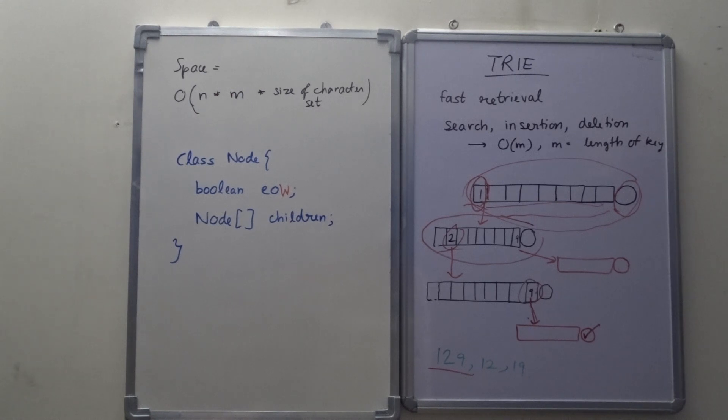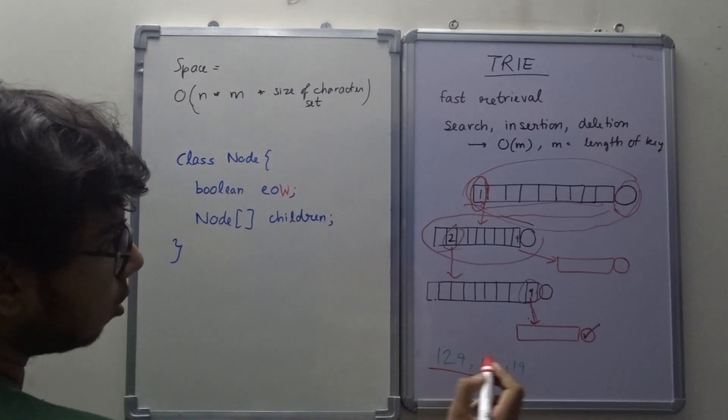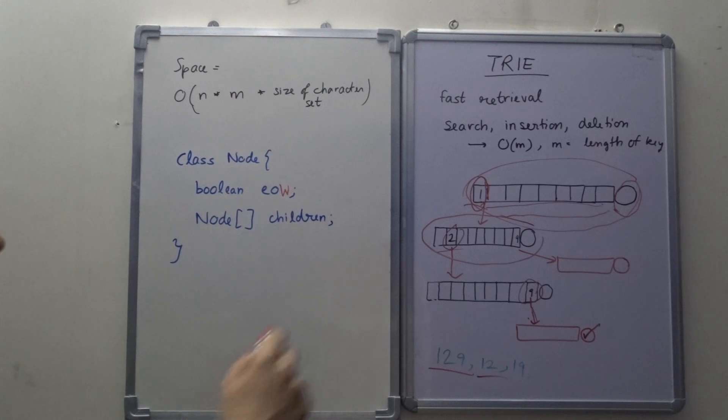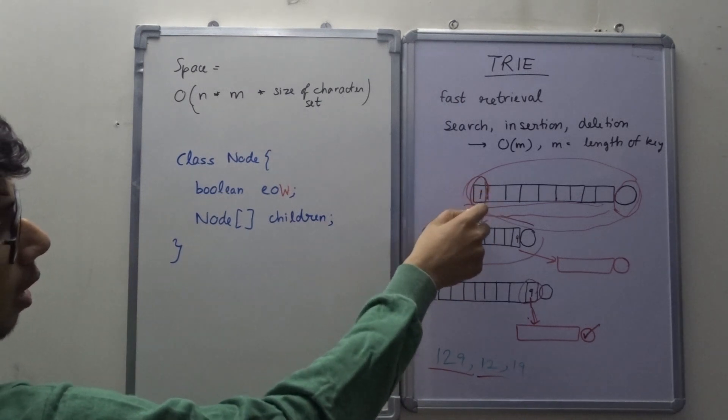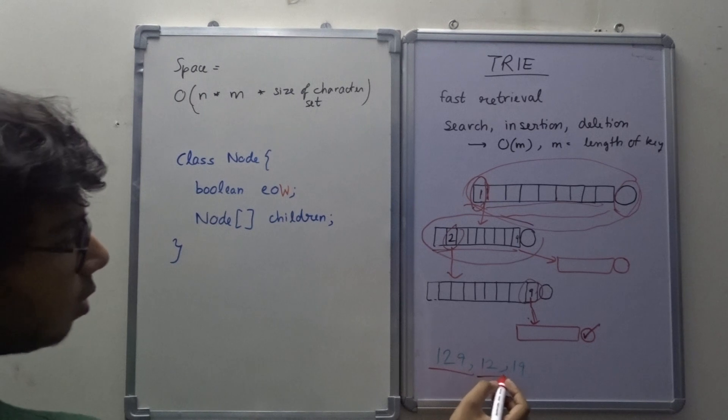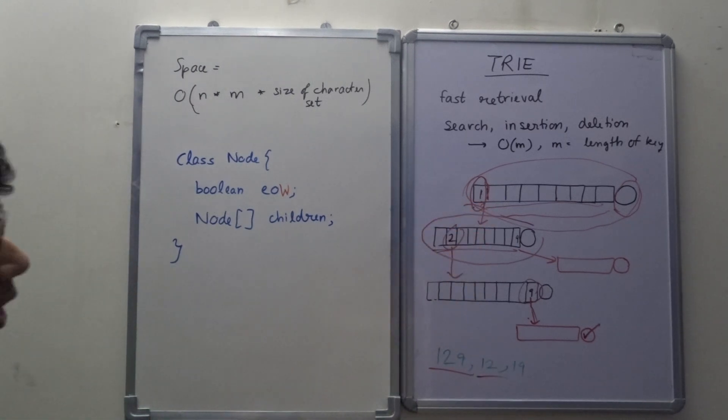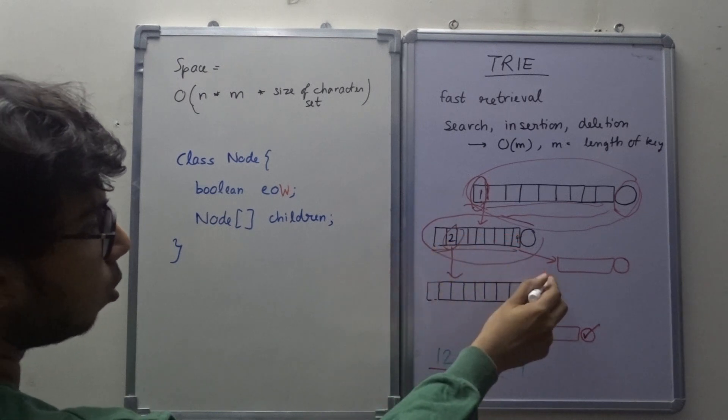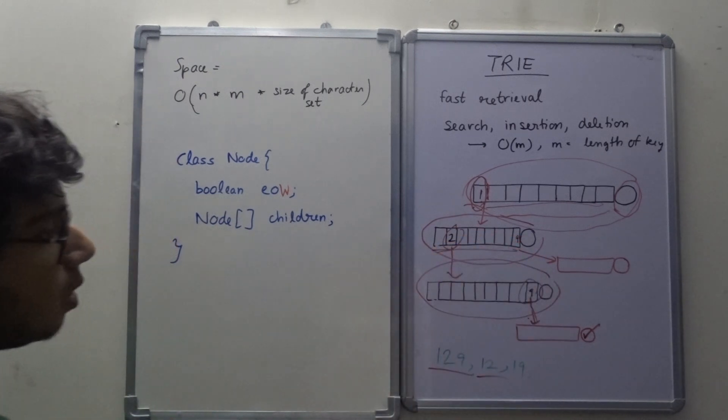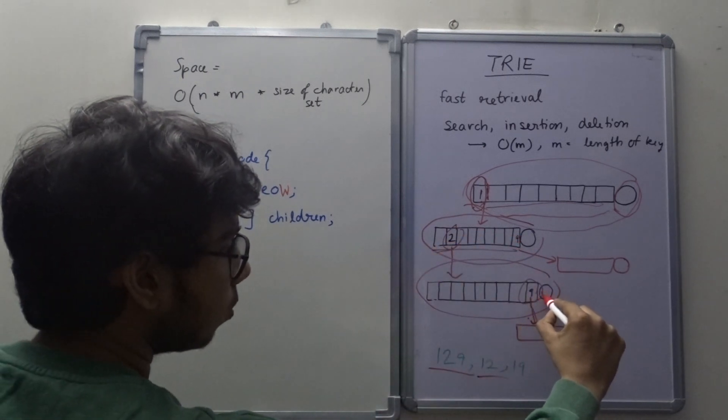Now suppose I have to insert 12 as a key in the Trie. So what I will do is, I have already created a node for 1 and in its children array, I have also created a node for 2. So what I will do is simply in the node 2, I will simply mark the end of word as true.